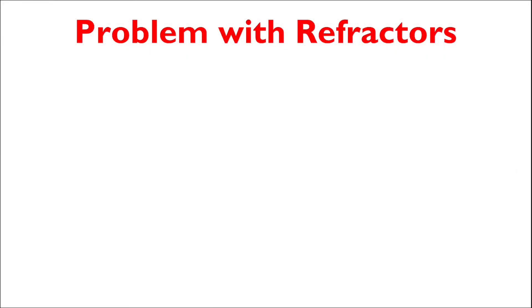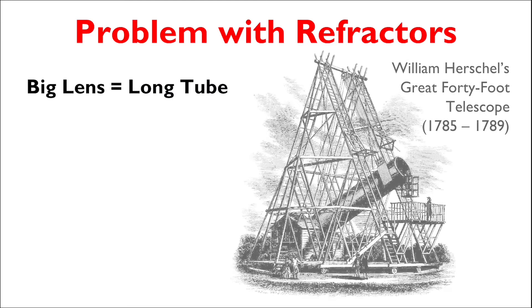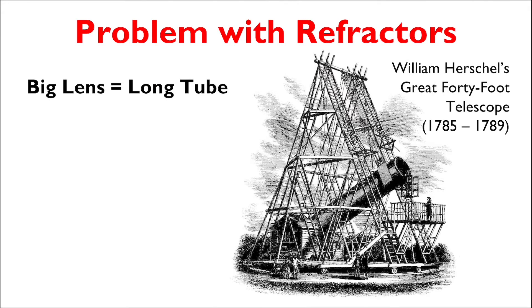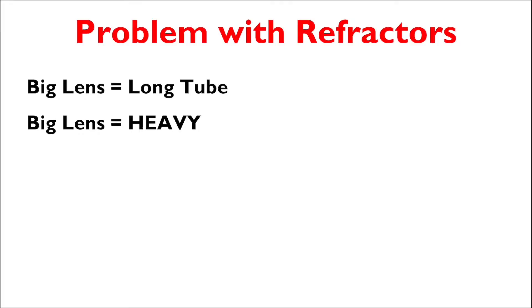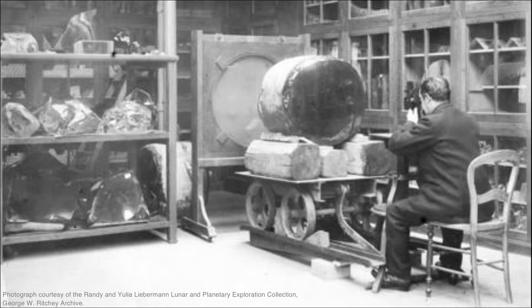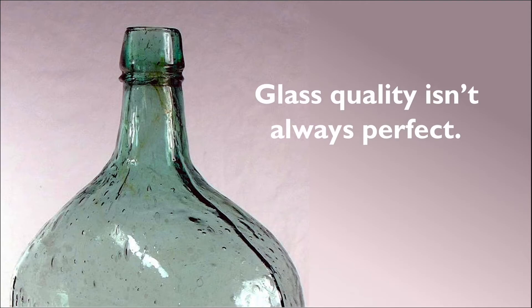Some of the problems with refracting telescopes come down to their actual functionality. In order for astronomers to get brighter and more high-resolution images from refractors, they need lenses that are as big as possible. But as the lens diameter is increased, so is the focal length, which implies longer and longer telescope bodies. The bigger the lens, the heavier it will be — not only will the lens itself be heavier, but the entire body of the telescope will require quite a bit of support. We also need to remember that the quality of glass isn't always perfect; inclusions and imperfections will always affect the quality of the images produced.